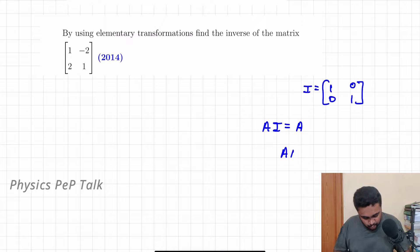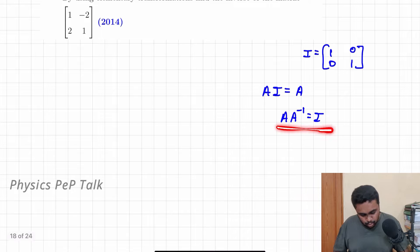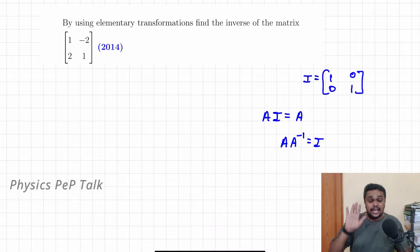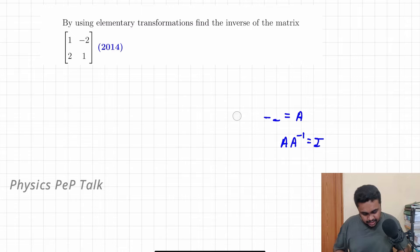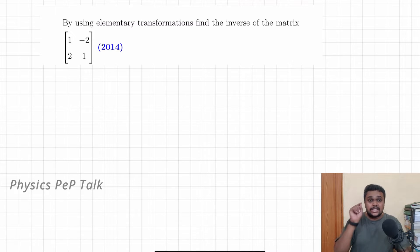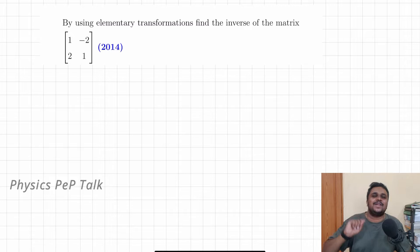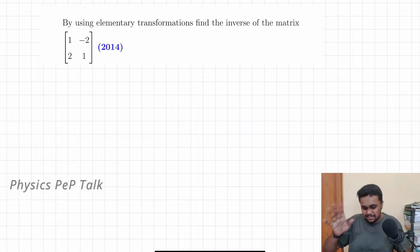That is, A into A inverse is equal to the identity matrix. If you solve these three properties, you will find that the identity matrix will be in the matrix. It will be easy to solve the elementary transformation. You will start to solve the first problem. The final answer is A inverse.